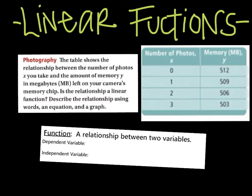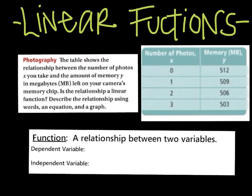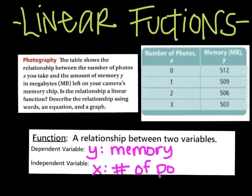In this example, the dependent variable is always your y, and the independent variable is always your x. And so the dependent variable in this case, what's going to change, the amount of memory you have is going to change. And the independent variable is your number of photos. It doesn't matter how many photos you have, it's the memory that is going to change.